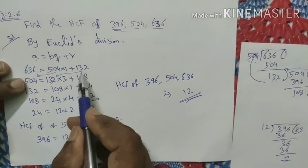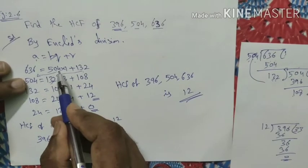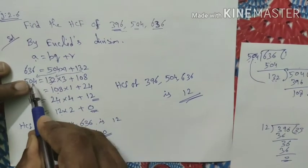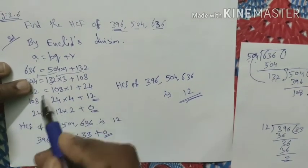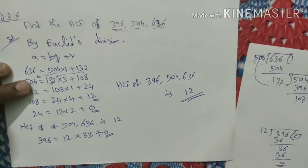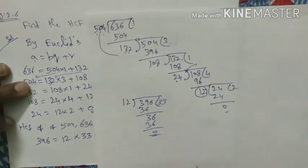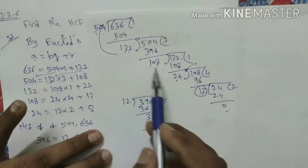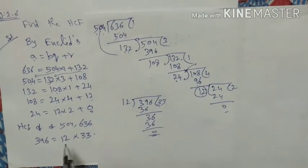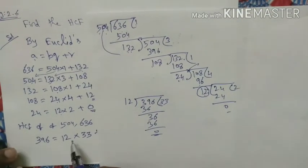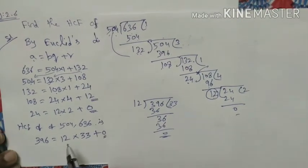The value is confirmed by applying the division rule and checking the remainder. This is the long division method, also called the division algorithm method.